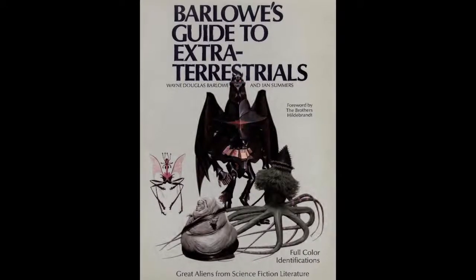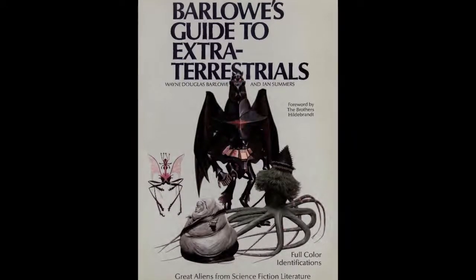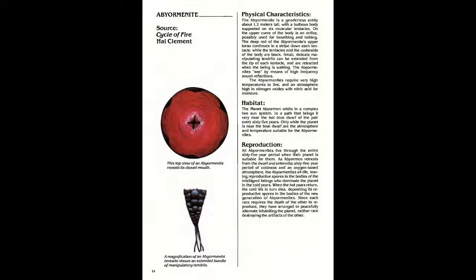Barlow's Guide to Extraterrestrials by Wayne Douglas Barlow and Ian Summers. Abjormenite: The Abjormenite is a genderless entity about 1.2 meters tall, with a bulbous body supported on six muscular tentacles.